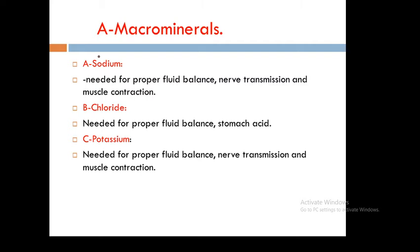Chlorine is needed for proper fluid balance and stomach acid, and it is found in milk, meat, bread, and vegetables. Potassium is needed for proper fluid balance, nerve transmission, and muscle contraction, and it is found in meat, milk, fresh fruits, vegetables, and whole grains.